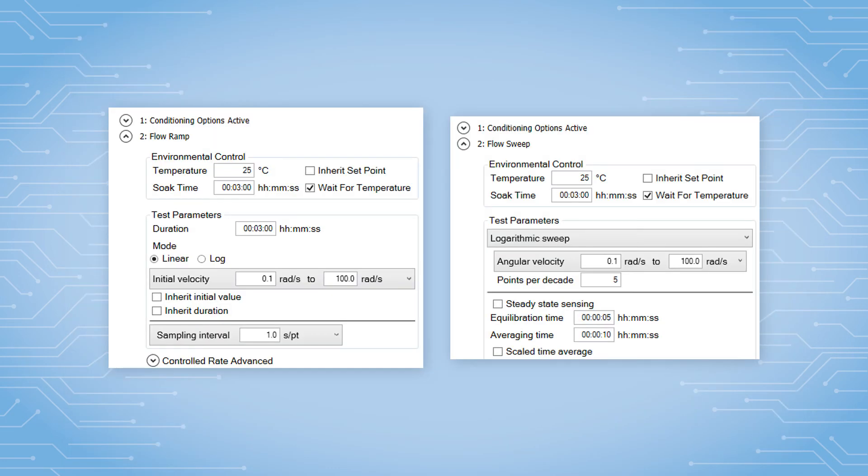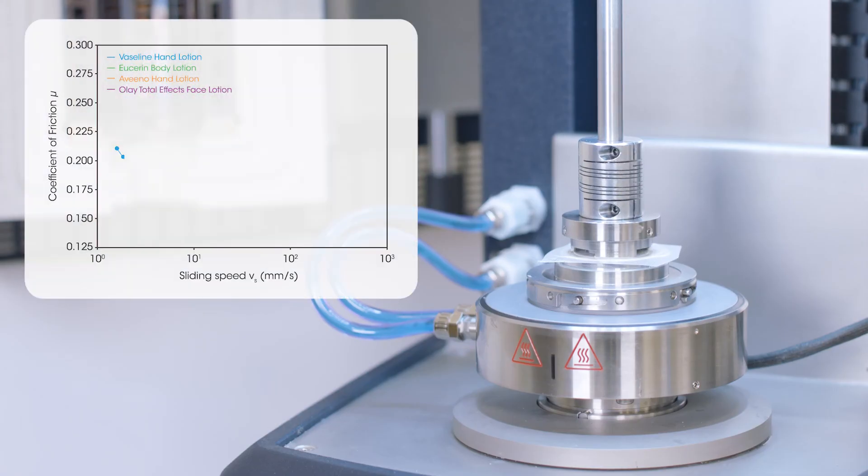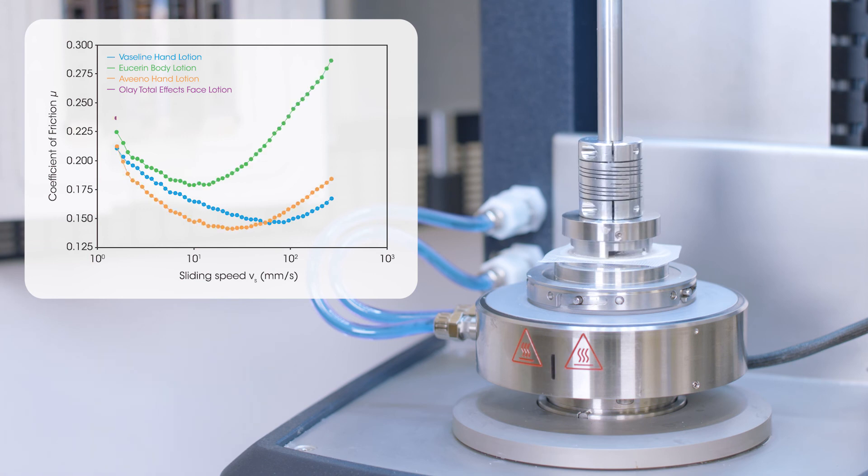The test procedure of measuring the coefficient of friction as a function of sliding speed can be either a flow ramp or a flow sweep. Here is one example of testing the coefficient of friction using different lotions as a media on an artificial skin.